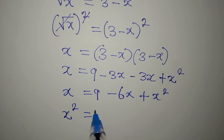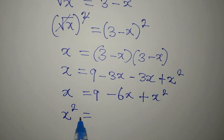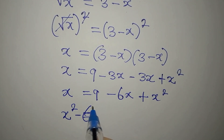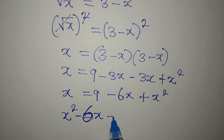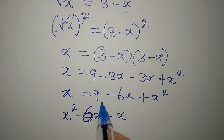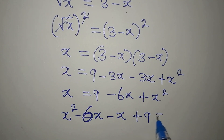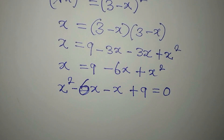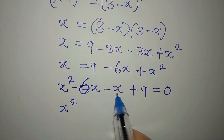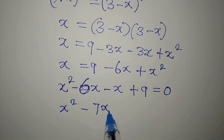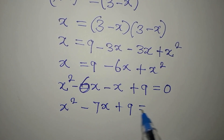Rearranging, we write x squared first, then minus 6x, then the x from the left side moves over and becomes minus x, and the 9 remains, giving us x squared minus 6x minus x plus 9 equals zero, which simplifies to x squared minus 7x plus 9 equals zero.